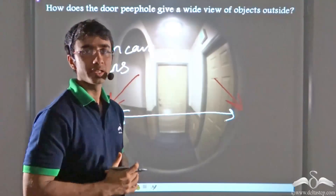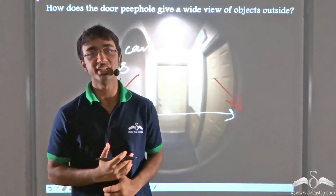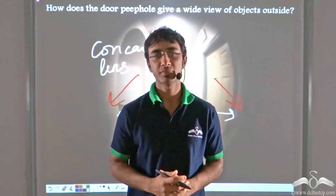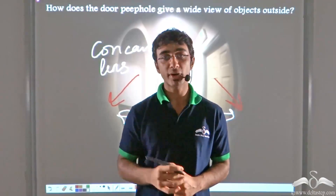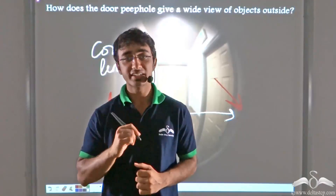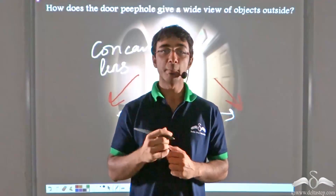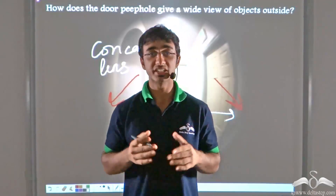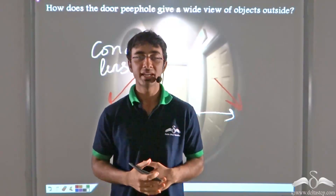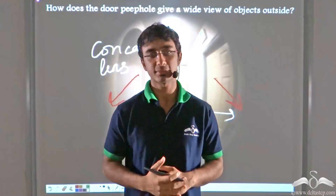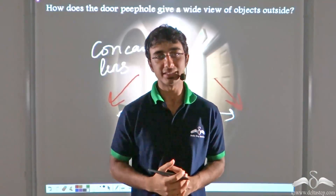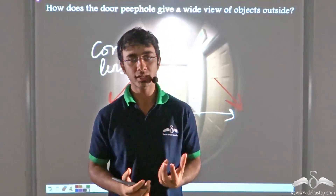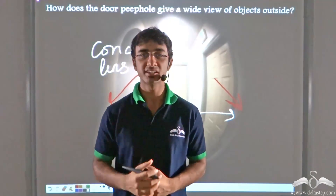So recapitulating what we learned: a concave lens is a diverging lens. In a concave lens, we have two foci — the first principal focus and the second principal focus. The first principal focus is defined as that point on the principal axis from which parallel rays of light, after refraction from both surfaces, appear to be diverging. The second principal focus is that point at which rays appear to meet, and after refraction they become parallel to the principal axis. The focal length of a concave lens is conventionally defined as the distance between F1, the first principal focus, and O, the optical center of the concave lens.